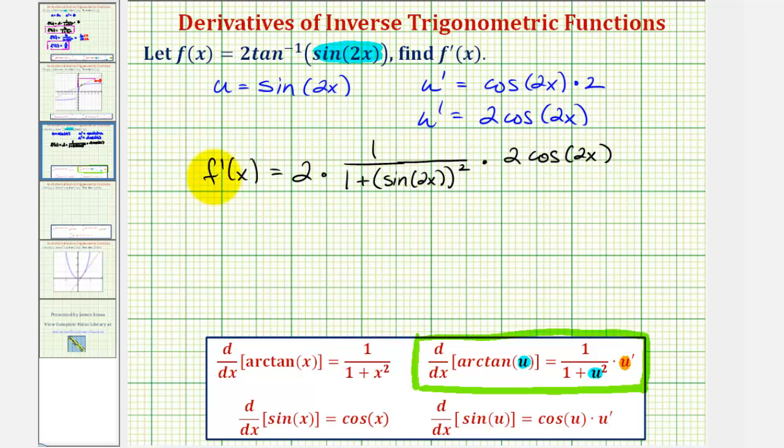Now let's go ahead and simplify. F prime of x is equal to, our numerator would be two times two cosine two x, or four cosine two x. Our denominator is going to stay the same. We'd have one plus, we can write sine two x squared as sine squared two x.